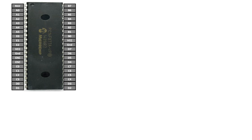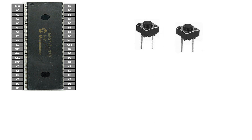This is the PIC 16F877A microcontroller DIP version having 40 pins. This is a push button — you can use any type found in the market. I'm using a two-pin push button. There are two push buttons: one will be used to increase the brightness and the other to decrease the brightness. This is the LED whose brightness will be controlled by these buttons.